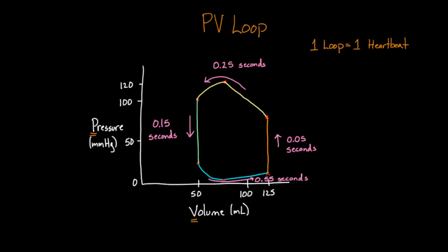Using our PV loop, let's show where systole would be. Starting here, the red represents all of systole. This part — isovolumetric contraction — is really quick, just a fraction of a second, about 0.05 seconds. Then the aortic valve pops open and systole continues. Systole starts with the initial contraction of the left ventricle and continues through all of this, including where the pressure is falling. That's all systole. The red part is systole.